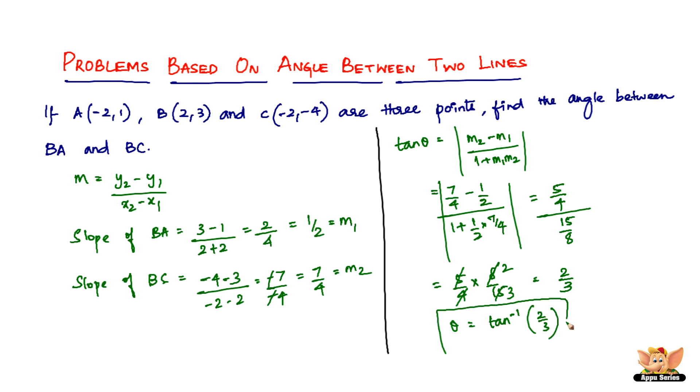So here is the angle between these two lines. So the angle between BA and BC is exactly tan inverse of 2 by 3. Since 2 by 3 is not a standard angle, you are not really going to find what exactly is theta.